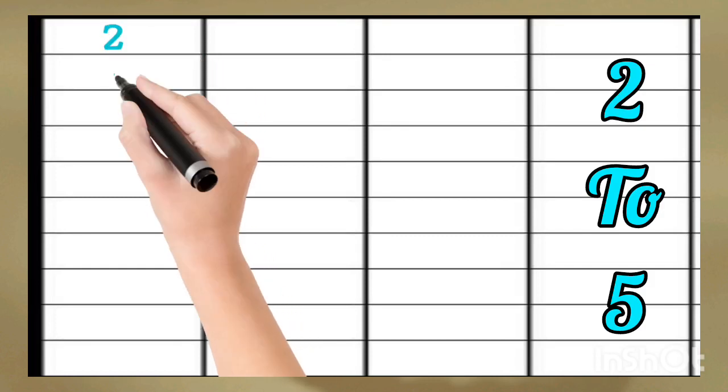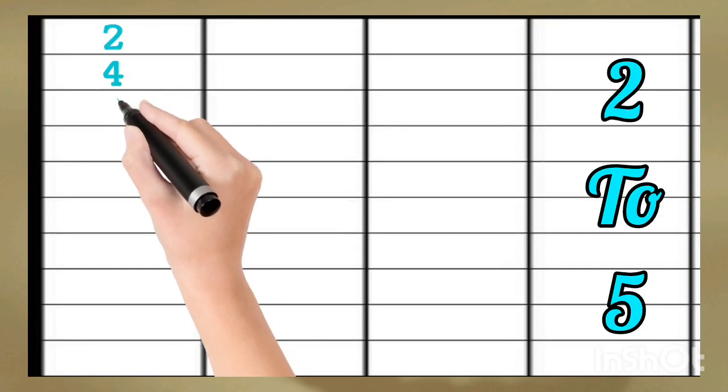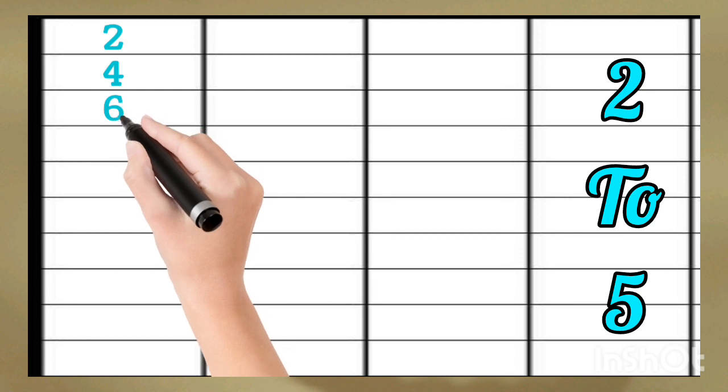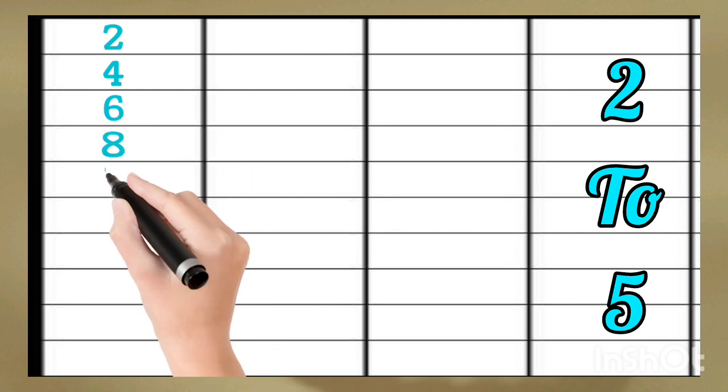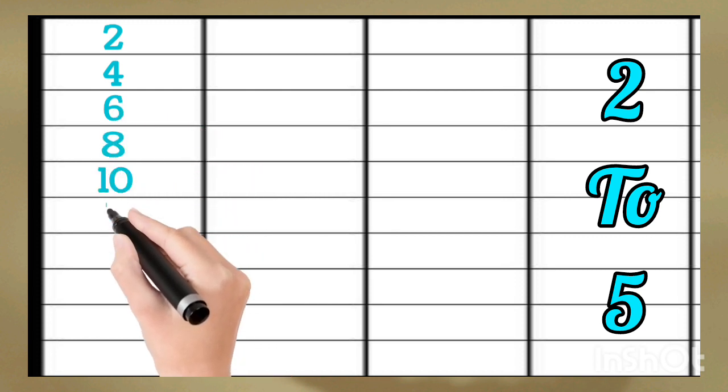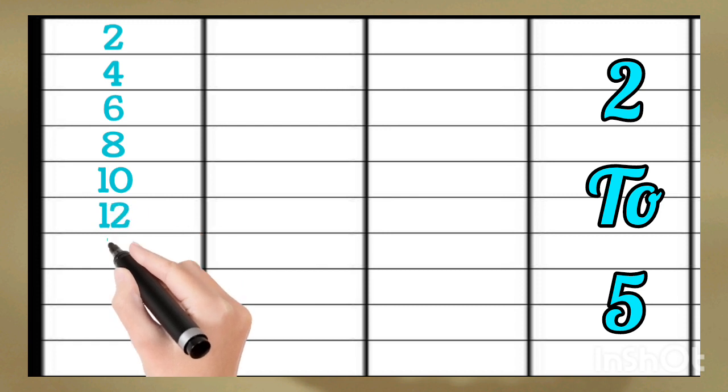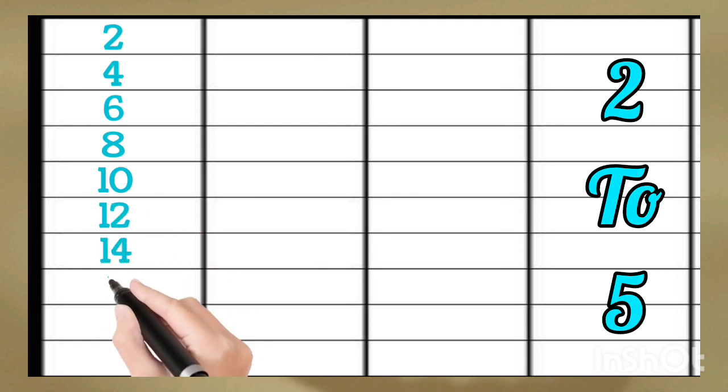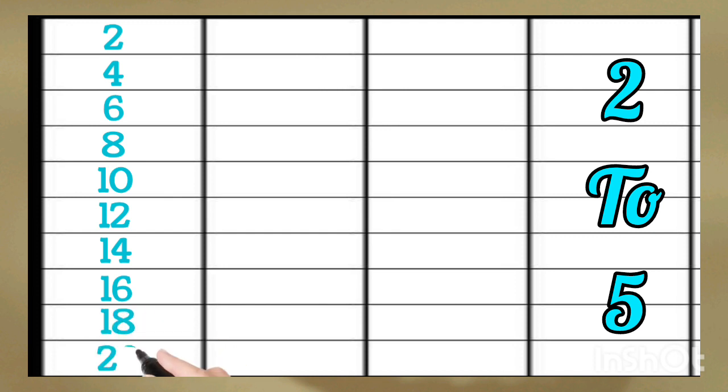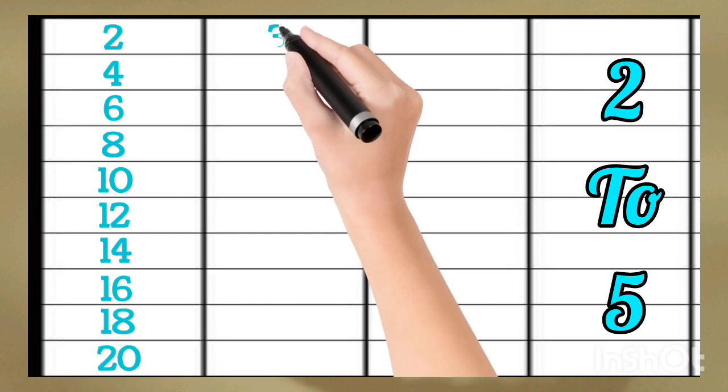2 times 1 is 2, 2 times 2 is 4, 2 times 3 is 6, 2 times 4 is 8, 2 times 5 is 10, 2 times 6 is 12, 2 times 7 is 14, 2 times 8 is 16, 2 times 9 is 18, 2 times 10 is 20. 3 times 1 is 3,